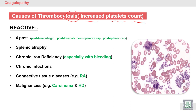We divide the causes of thrombocytosis into first: reactive thrombocytosis. Reactive thrombocytosis means that platelet count is increased reactive to another, or secondary, cause. These causes include post-hemorrhagic (after bleeding), post-traumatic (after trauma), post-operative (after surgery), and post-splenectomy (after removal of the spleen).